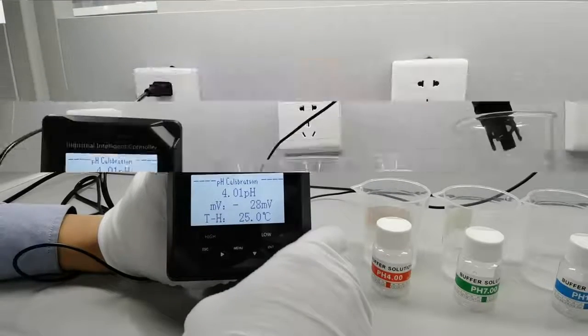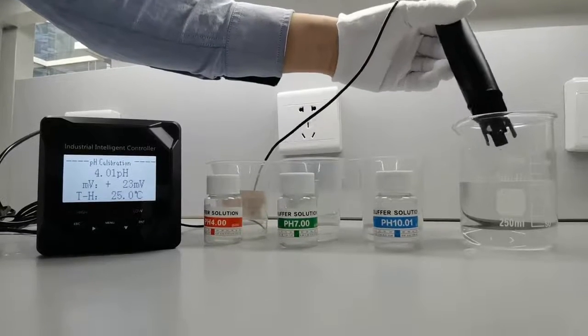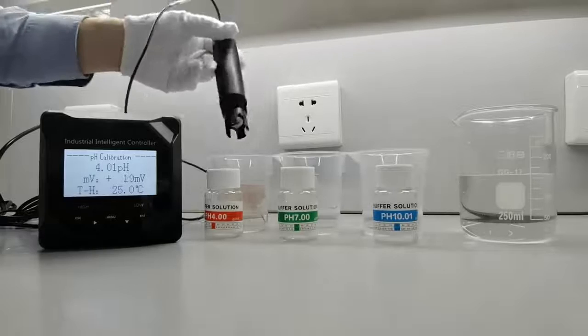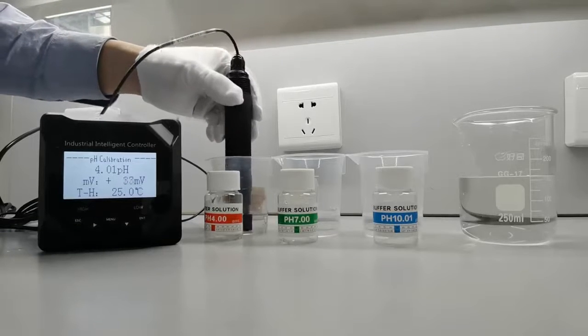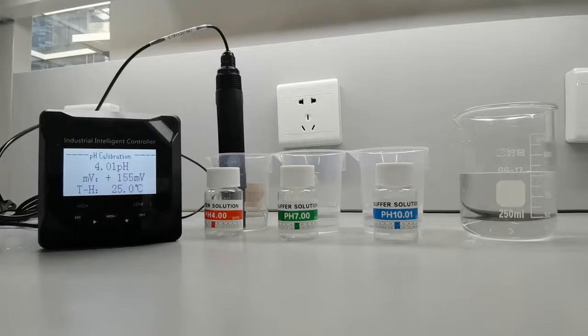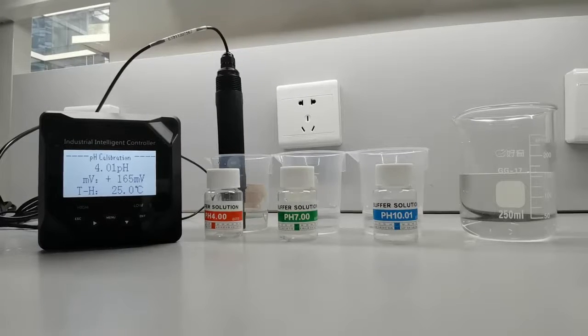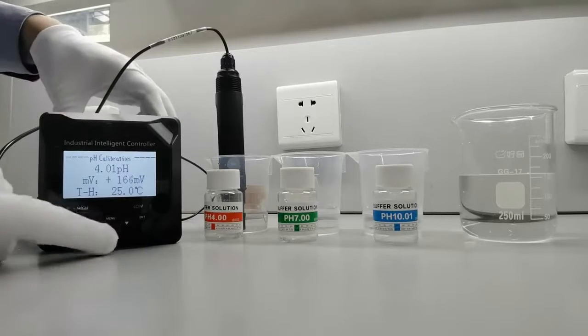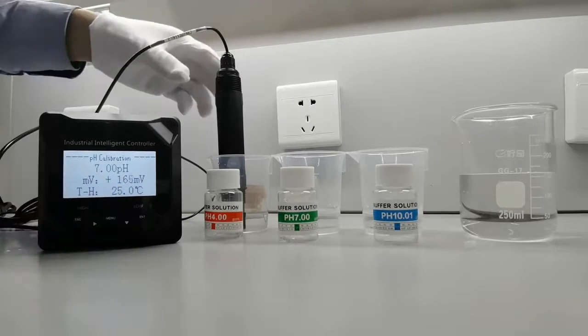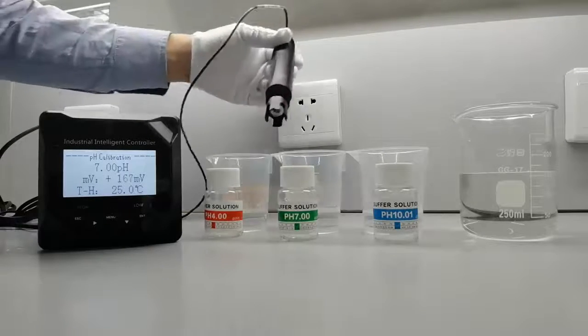To begin the calibration process, immerse the electrode in the pH 4 standard solution and wait until the measurement is stable. After the measurement is stable, press enter, then rinse the electrode in distilled water.